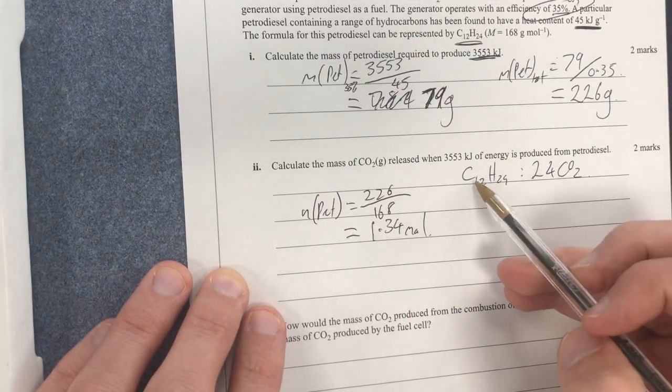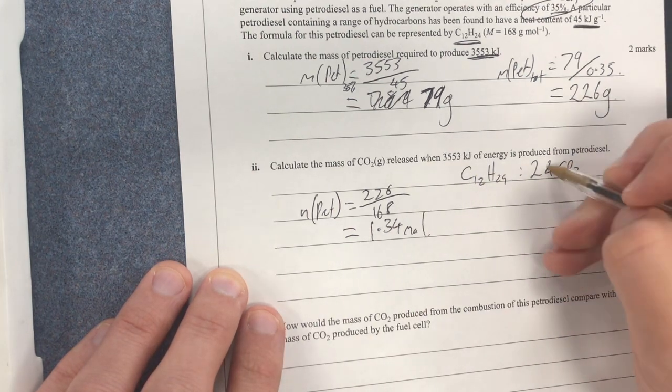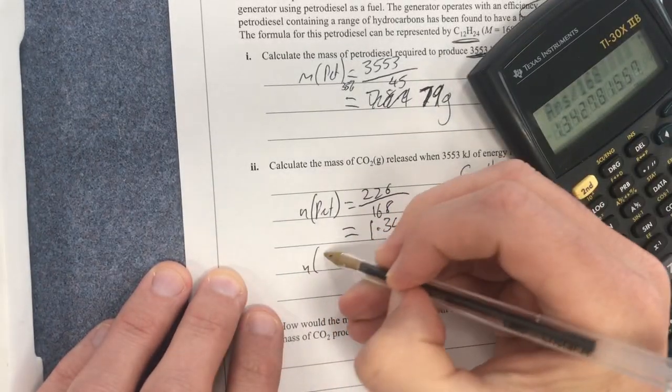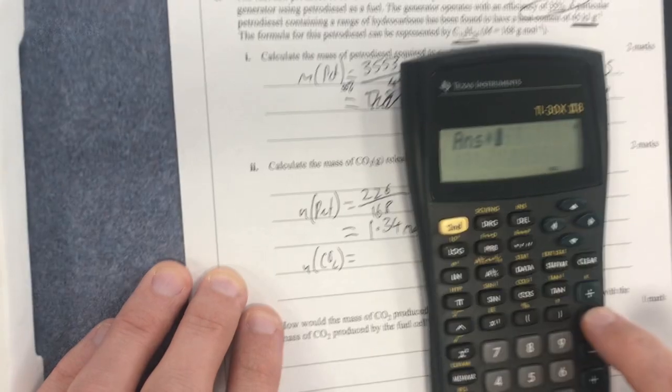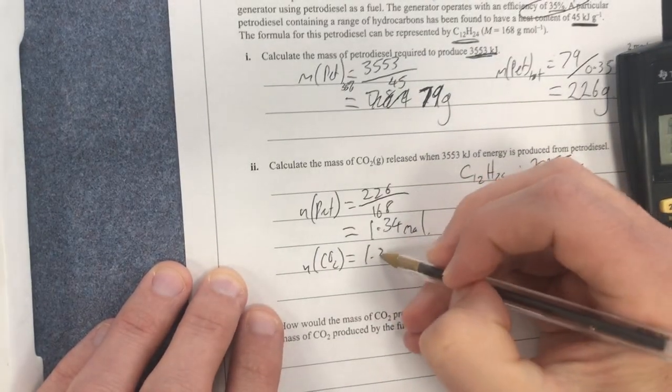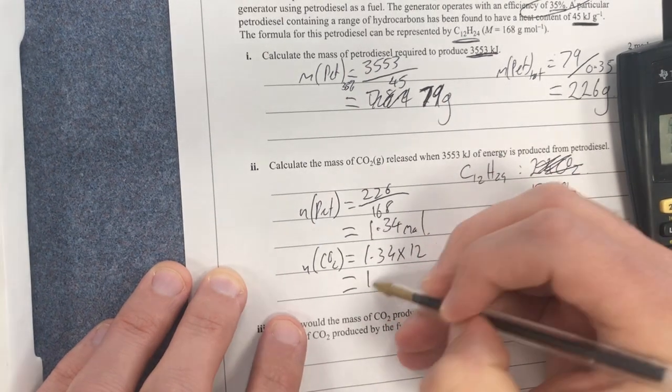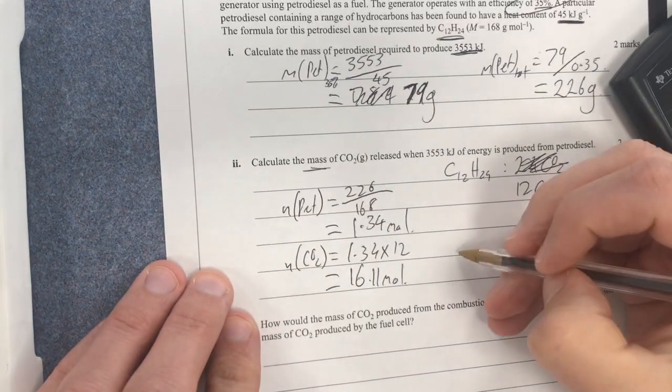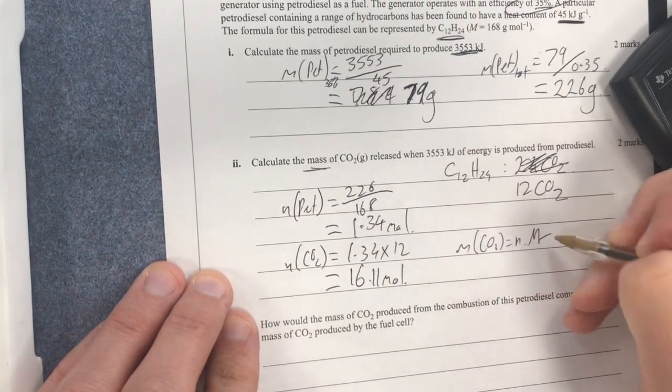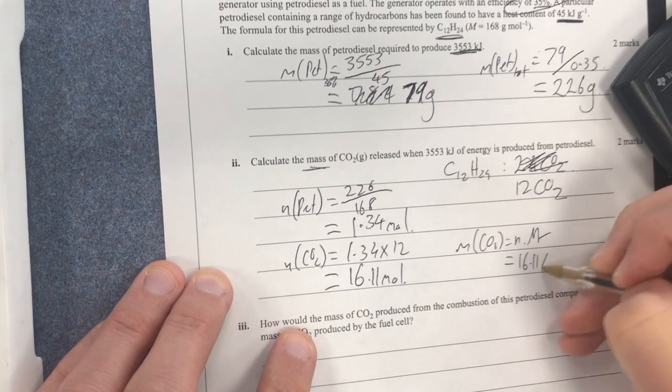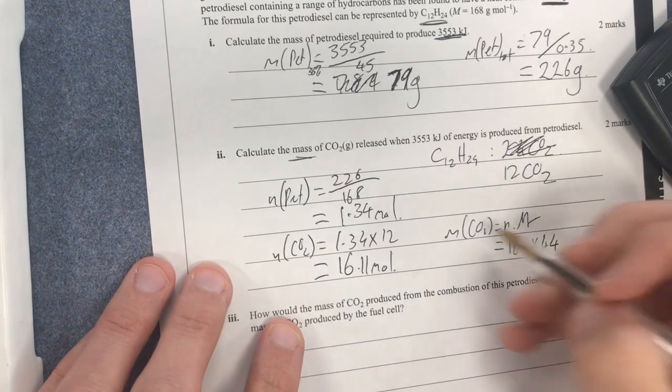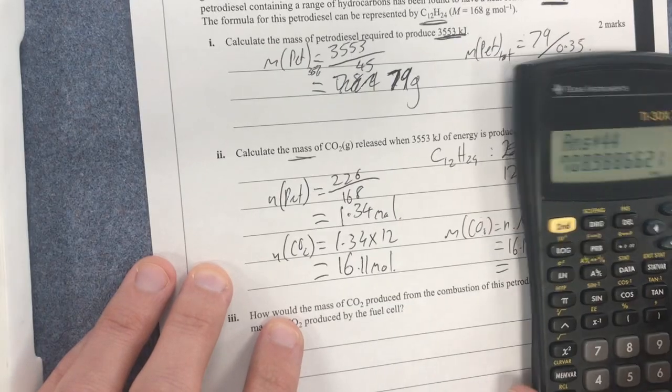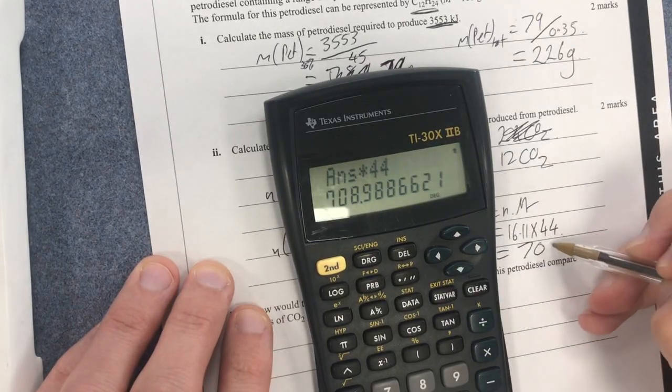So that divided by 168 gives me 1.34 mole of my petrol. Now, when I burn my petrol, all my carbon is going to be converted into carbon dioxide. So that's why it's a ratio to 12 CO2. So therefore, if I take that, my number of moles of CO2 will be equal to that times by 12 equals 1.34 times by 12 equals 16.11 mole. And I know mass, so my mass of CO2 equals number of moles times molar mass, which equals 16.11 times 44. This is something you should know. Carbon dioxide's molar mass is 44. So that times by 44 gives me 709 grams.